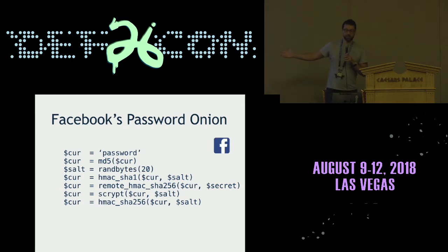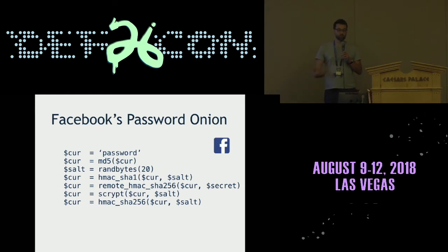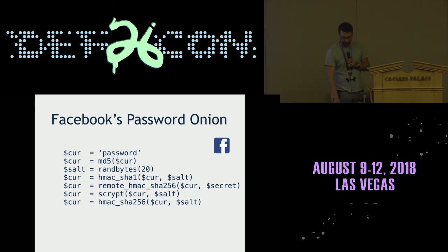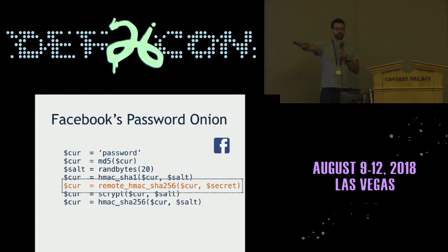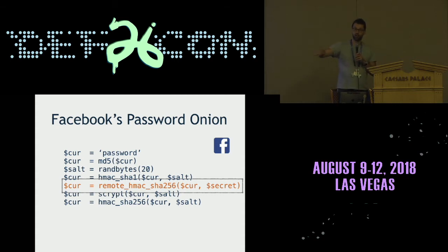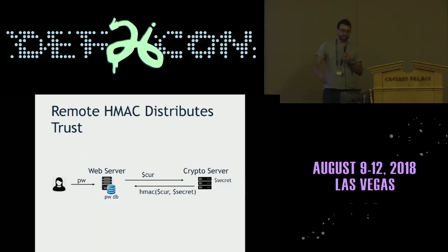What we're left with is this pseudo code, which is now an archeological record of Facebook struggling to protect passwords. But I want to point out something interesting: most of this processing happens on the same server, but at some point during this processing Facebook reaches out to a second server. That server applies HMAC-SHA256 with a secret held only on that server and sends the result back. And that's actually really neat, because it leads to a different kind of architecture.